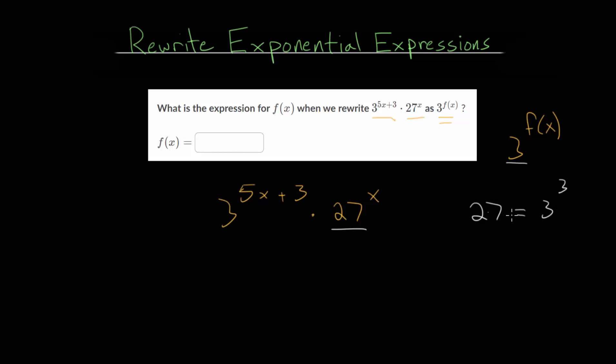So, with this fact, let's just make a substitution and rewrite this 27 to the x as really 3 to the 3rd all raised to the x. So, let's first rewrite our first expression. We have 3 to the 5x plus 3. And, now we have 27 to the x. But, like I mentioned, we can rewrite 27 as 3 to the 3rd power.